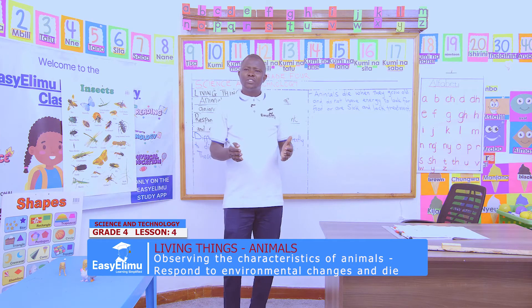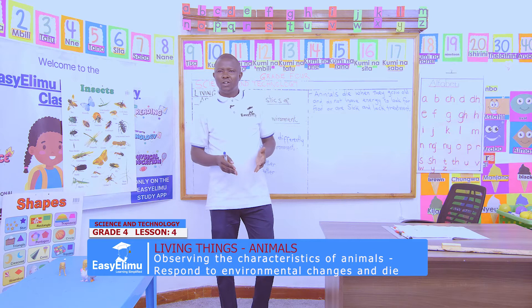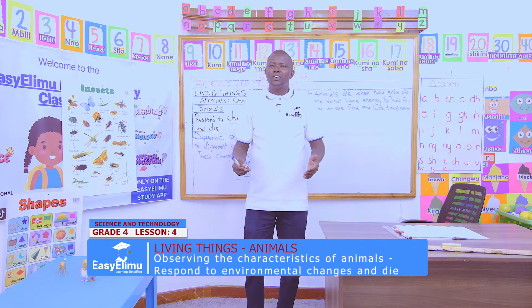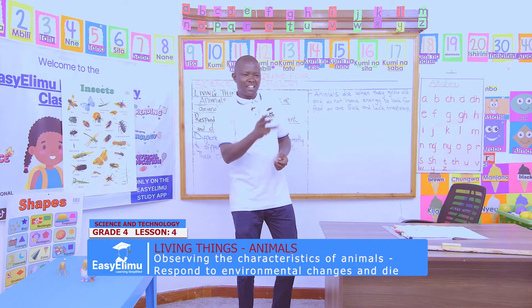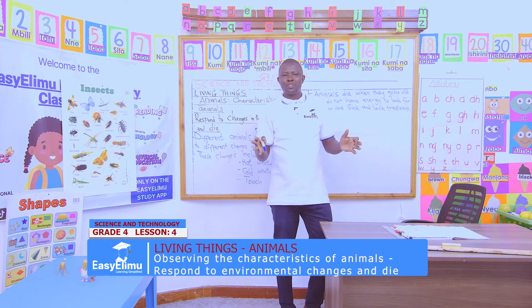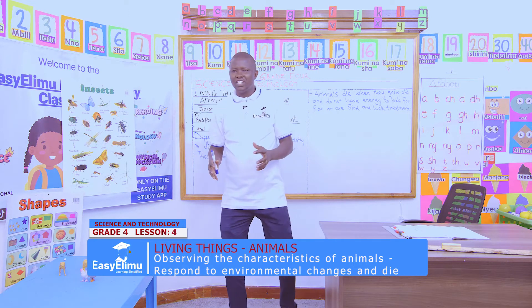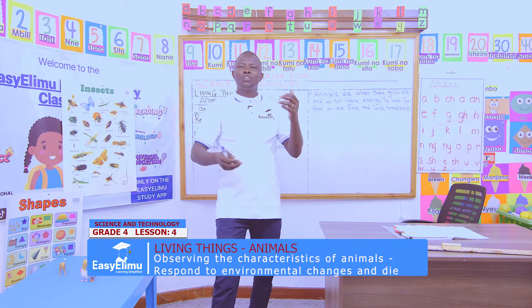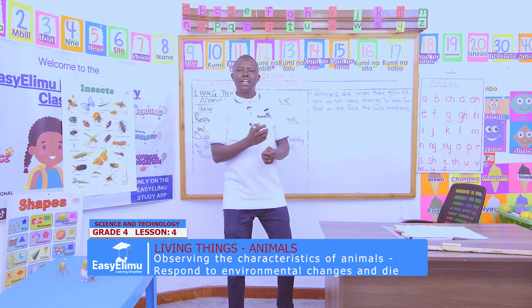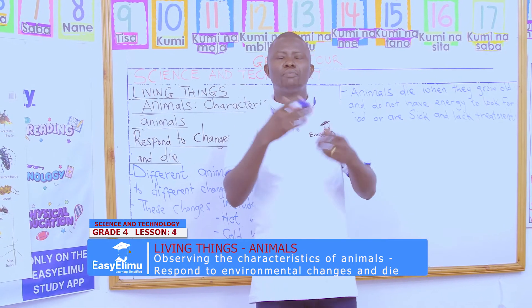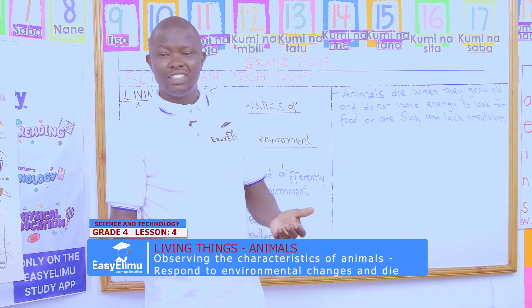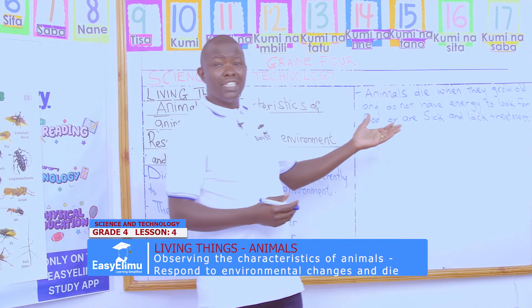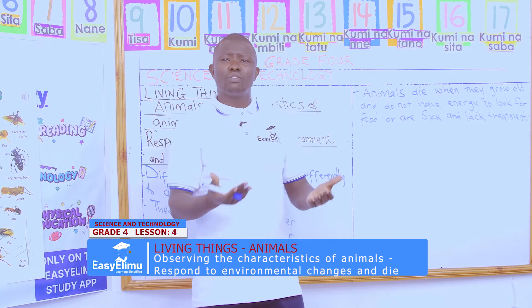And now, when animals grow old, when they reach a certain point, they don't have the energy to go and look for food — something happens to them. And they want us to discuss in pairs what happens to these animals. Animals when they grow old, they don't have the energy to go look for food. They stay there waiting for somewhere they can get food from. So what does happen? Victor says the animal will definitely die because there is no way to feed.